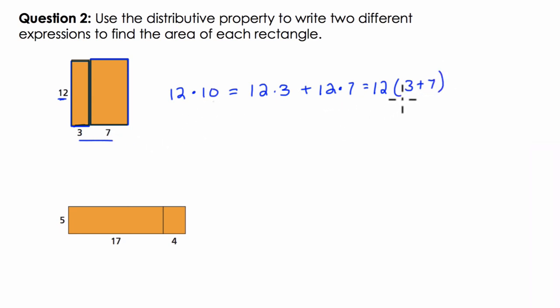And that shows us how the distributive property works into this. In the second example, we have 5 times 17 and 4. I'll write it that way first.